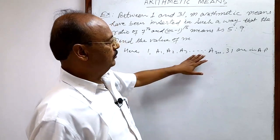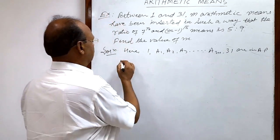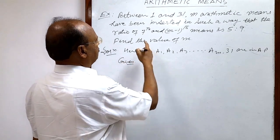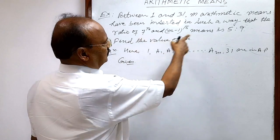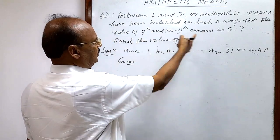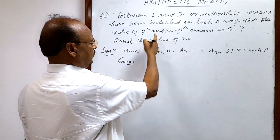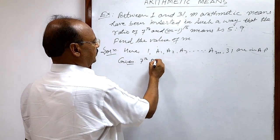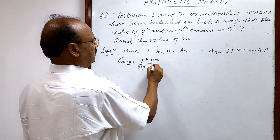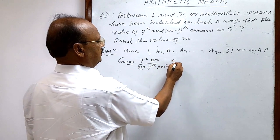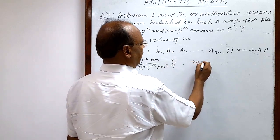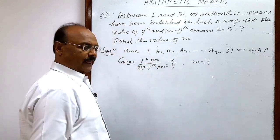We have to find the value of m. It is also given that the 7th arithmetic mean upon the (m−1)th arithmetic mean equals 5 by 9. Then we have to find the value of m.